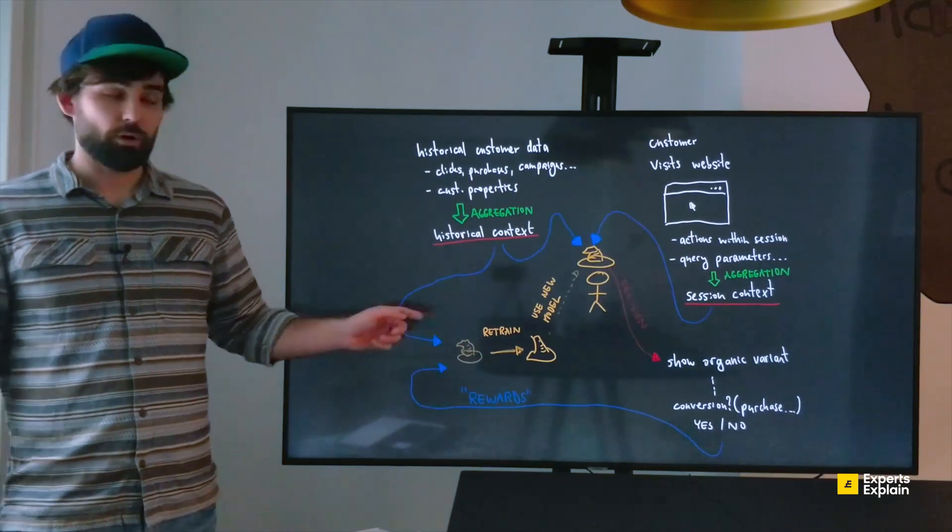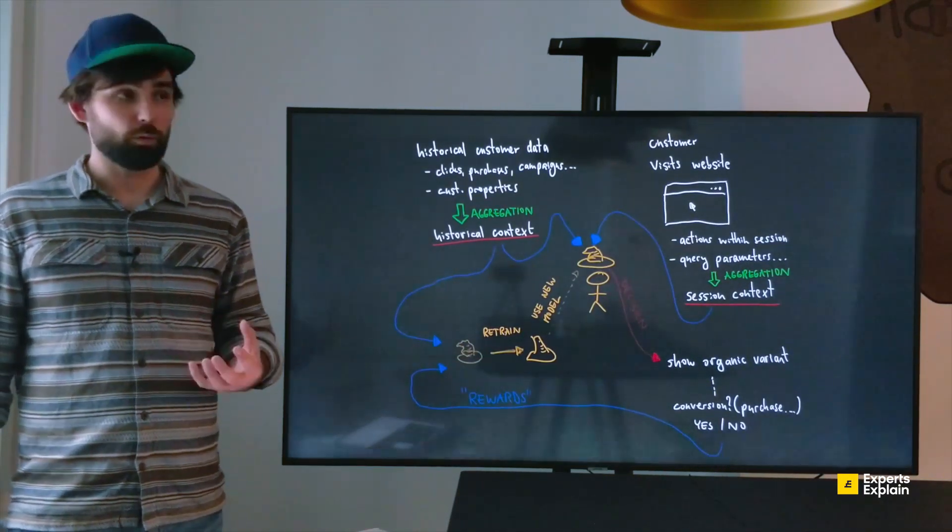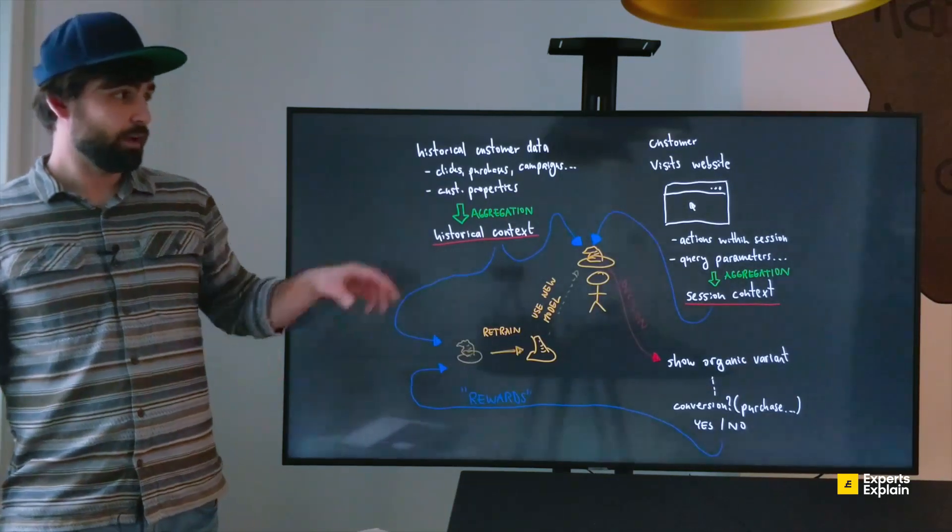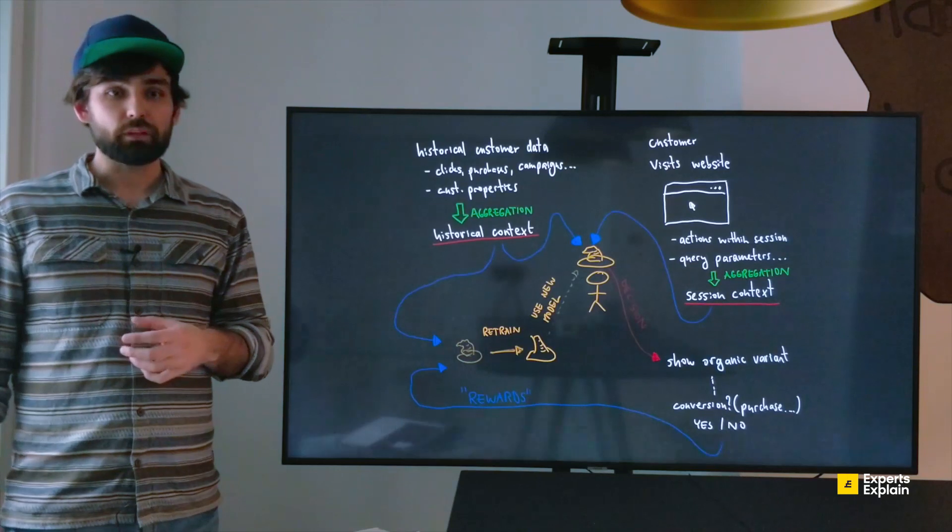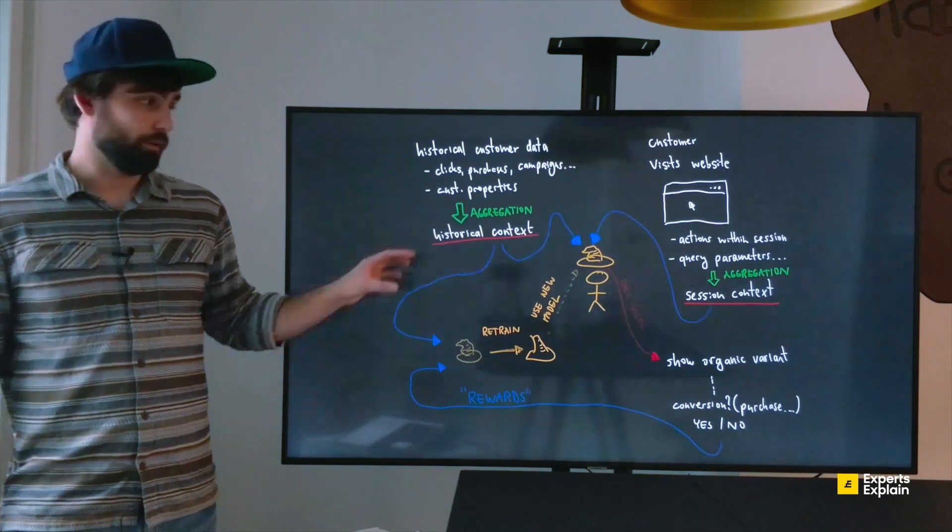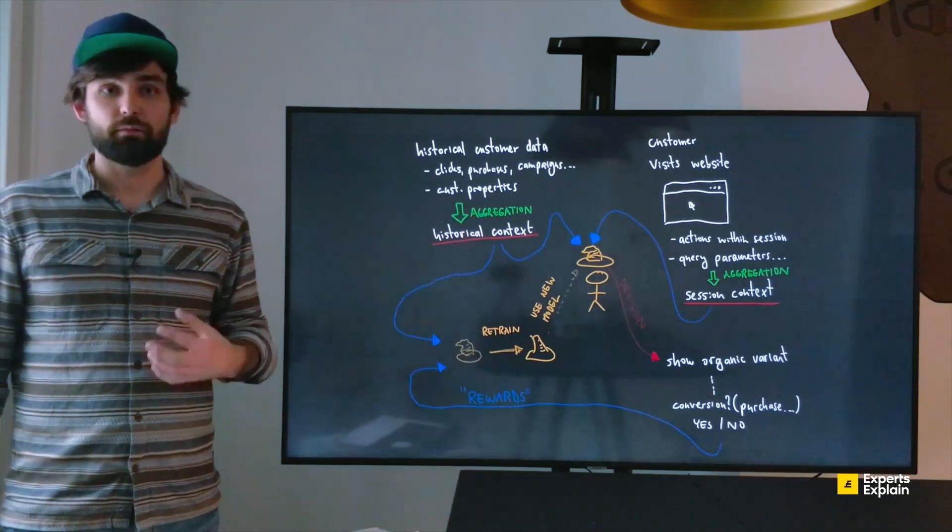This provides feedback for the model and it will know whether it made the right decision when it paired the context with the variant. Over time the Contextual Bandit will make much better decisions.